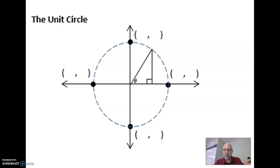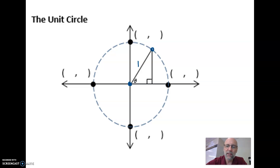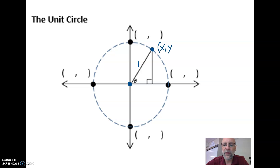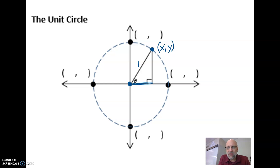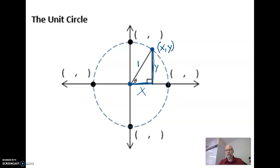This is the unit circle. It's called the unit circle because the radius of this circle is 1 unit. This point right here is the point (0, 0). Any point on the unit circle can be represented as (x, y). The length of this segment is x, and the length of this segment is y. X is the x-coordinate of that point, and y is the y-coordinate of that point.